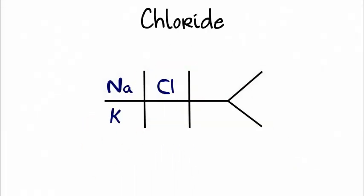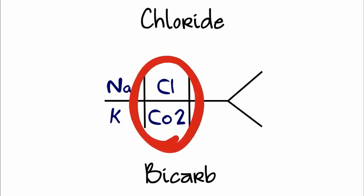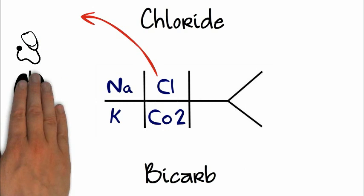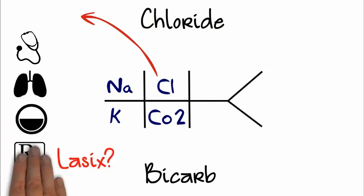Next, we're going to talk about chloride and CO2, or bicarb. And these are our acid-base balances. And we're going to look at these together. First, we have chloride. We assess the patient. Is it a respiratory cause? Are they dehydrated? Or have we given them too much medication that upset their acid balance?